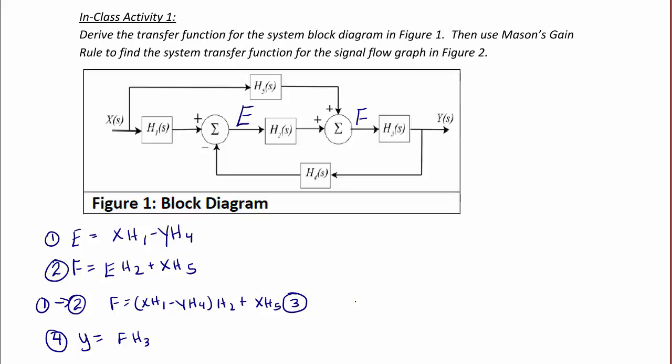Y is equal to FH3. Next, we're going to substitute equation E3 into equation E4. So Y is equal to the quantity XH1 minus YH4 times H2 plus XH5 times H3.